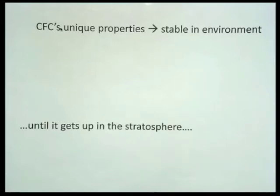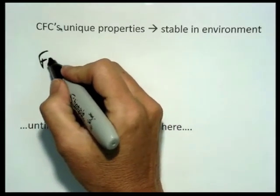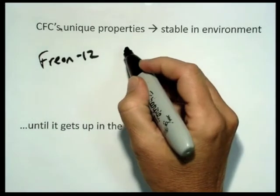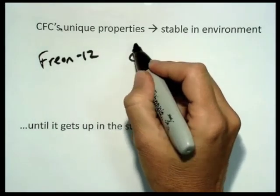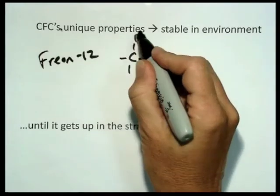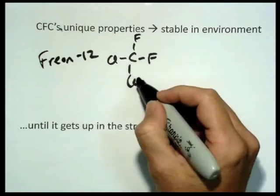And so because, for example, if you look at Freon-12, or the CFC-12, that was the one that had two chlorines and two fluorines. And we've noted that these bonds are very, very strong. So it's a very stable molecule.